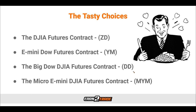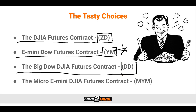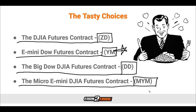Now for some tasty choices — choices regarding which Dow Jones Futures Contract we choose to trade, because we do have some options. We have the original, old school DJIA Futures Contract, which is ticker symbol ZD. Then we have the E-mini Dow Futures Contract, which is my personal favorite — that's YM. We showed you how to pull this one up at the beginning of the video. Then we have the Big Dow DJIA Futures Contract, which is DD. And then we have the Micro E-mini DJIA Futures Contract, which is a smaller variation and that is MYM instead of just YM.